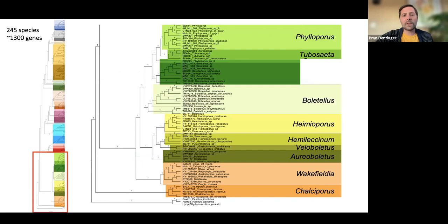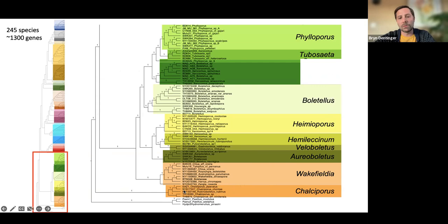The third part of the tree shows the earliest diverging group, which has been shown previously to be Chalciporus and Buchwaldoboletus — it's sister to Chalciporus. And then we have some stuff here that I called Wakefieldia because that's the oldest name, with a hypogeous bolete in that clade along with other stuff. Don't get married to that name — it probably won't be the name chosen in the end.